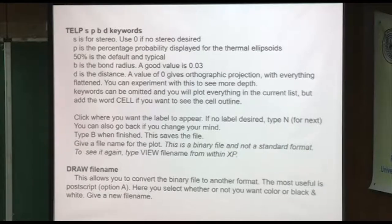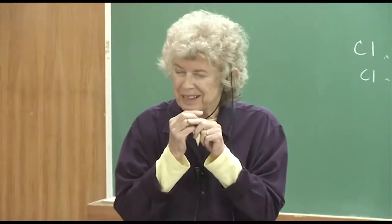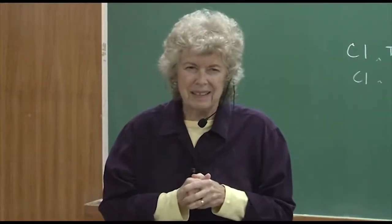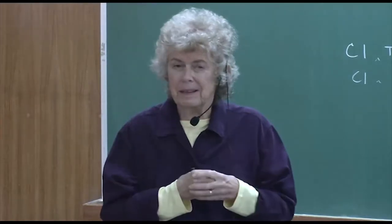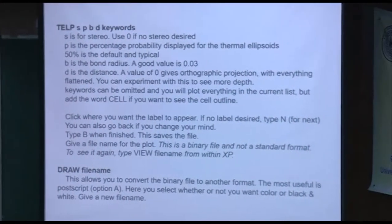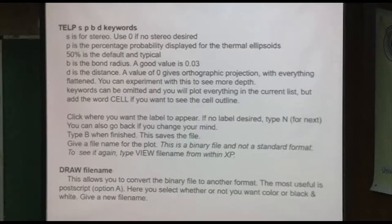TELP has some arguments. S is for stereo, which you never see anymore — people used to do drawings in stereo where the left-hand drawing is rotated so many degrees and the right-hand so many degrees, so you could cross your eyes to see it in three dimensions. The journals don't want them anymore, so forget about that. Usually zero, because you're not using stereo. P is the percentage probability displayed for the thermal ellipsoids — usually 50%. If you have a lot of heavy atoms and the ellipsoids are small, you might want to ramp it up. If you have really large thermal ellipsoids, you might ramp it down — I wouldn't go below about 30%.